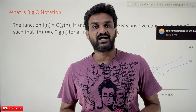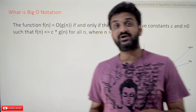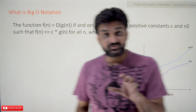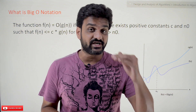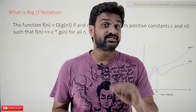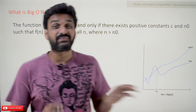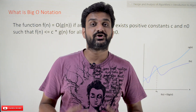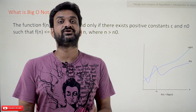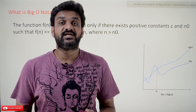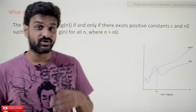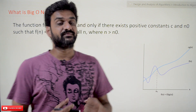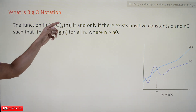Hi, welcome to Learning Monkey. I am Vikram. In this class we'll try to understand what is Big O notation. We have clearly understood the definition of asymptotic notation and the different types of asymptotic notations in our previous video. If you haven't watched that video, please watch it because understanding those concepts is very important for this class. Every video in our channel is part of an entire course or playlist — our suggestion is to follow the entire course for better understanding. The link for the playlist is provided in the description below.